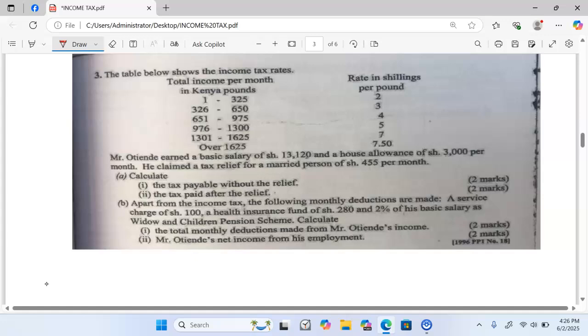He claimed a tax relief for a married person of shillings 455 per month, but he calculated the tax payable without relief. In this case, what you mean is gross tax or simply total tax.